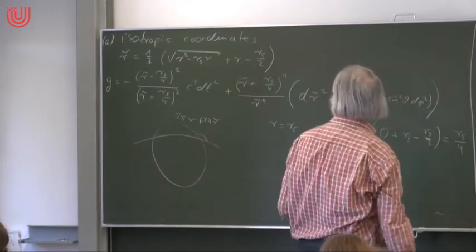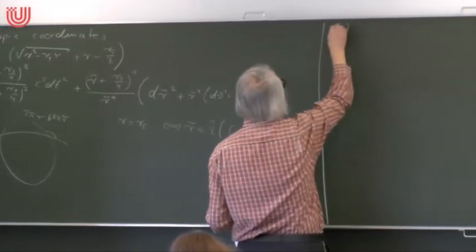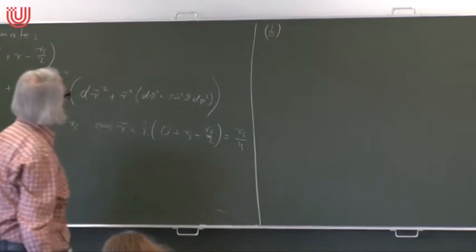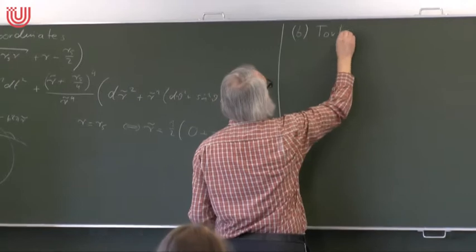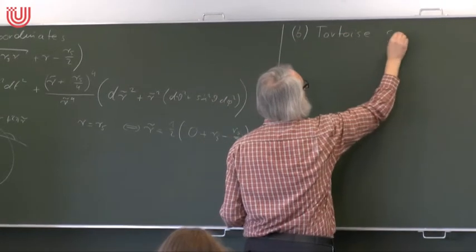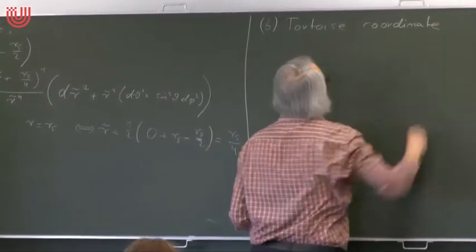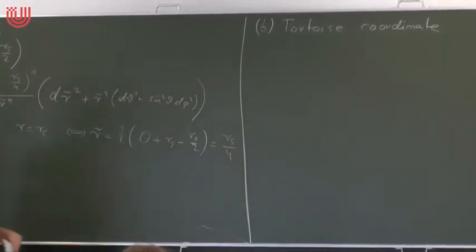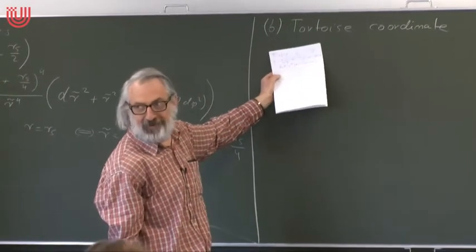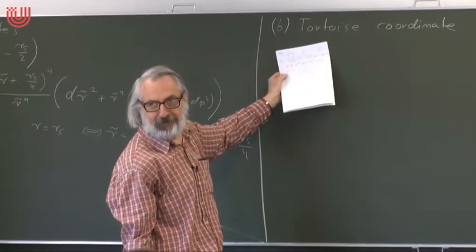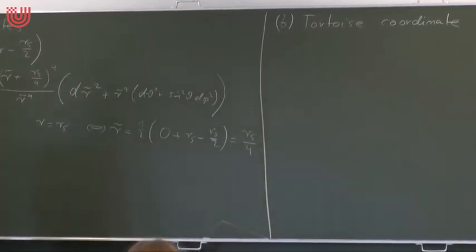Let's try another coordinate system which also will not help us with the singularity, but will give some other interesting information. This is the so-called tortoise coordinate — not named after a gentleman, but it's the English word for Schildkröte. These are the Schildkröten-Koordinaten in German, and I'll explain in a minute where this funny name comes from.